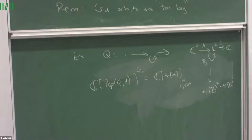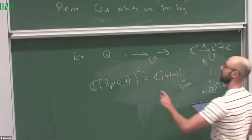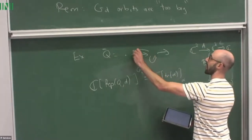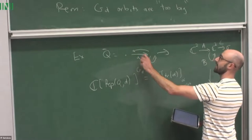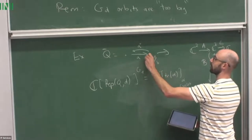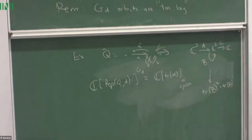The doubling procedure works as follows: every time I see an arrow, I draw an arrow back. If the original arrow is named A, the arrow back is named A*. If you have a loop B, you also draw another loop B*. That's doubling.